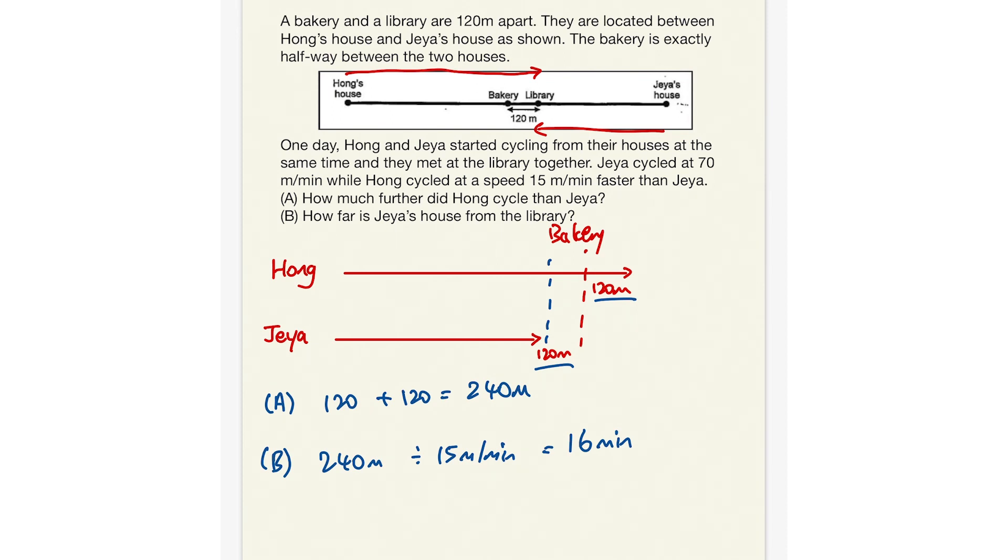Now, we use Jaya's speed to be able to calculate Jaya's overall distance traveled. Now, Jaya traveled at 70 meters per minute, and she cycled for 16 minutes. This means that her distance from the library is actually 1120 meters or written as 1.2 kilometers.